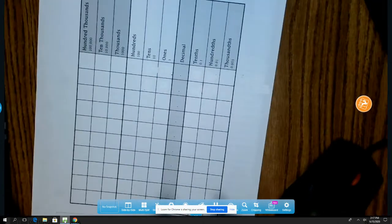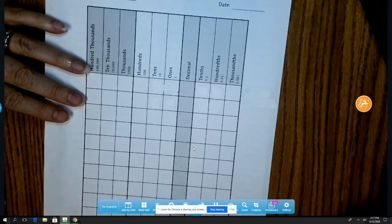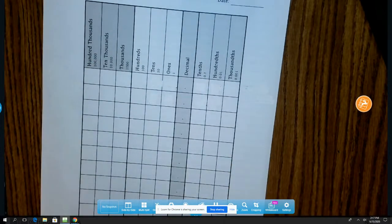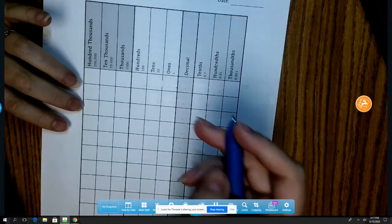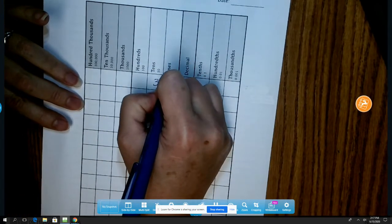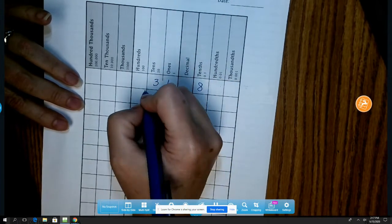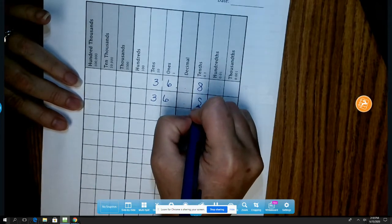In lesson 6, we're going to be comparing numbers with decimals. So on the first one, I want to show you on a place value chart so you can get more of a visual in your head about what this looks like. And we're going to start with numbers 36 and 8 tenths and 36 and 82 hundredths.